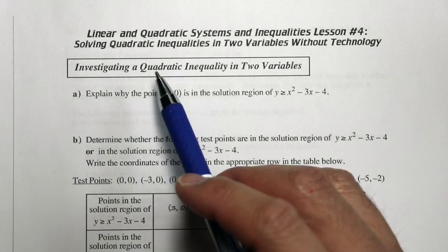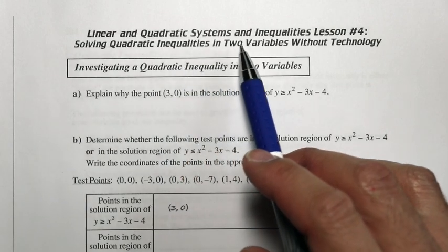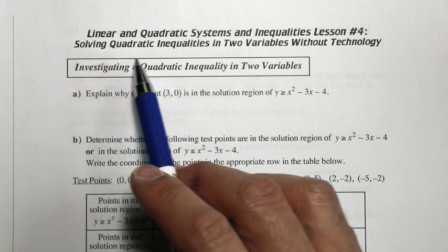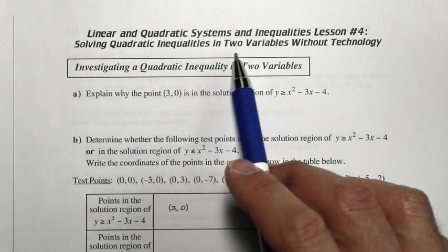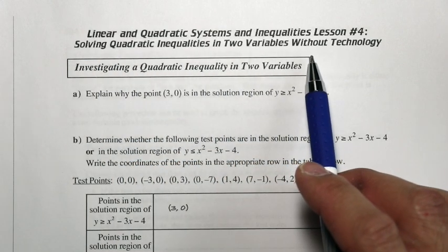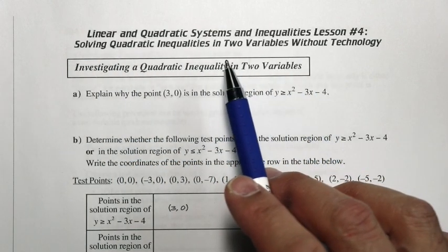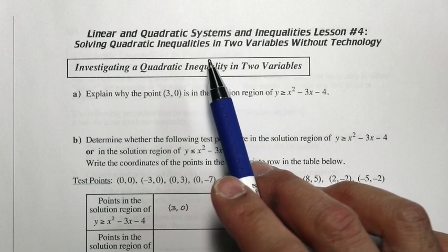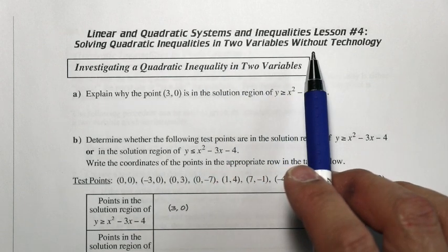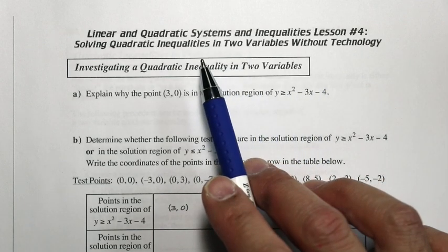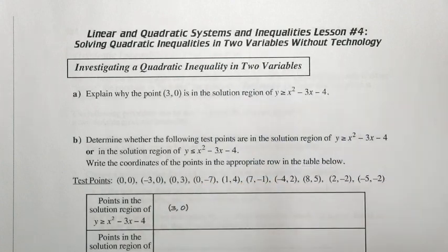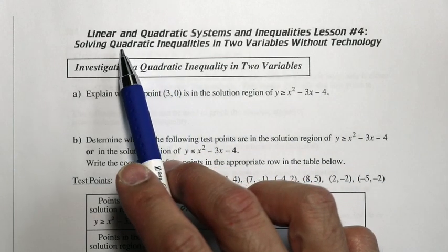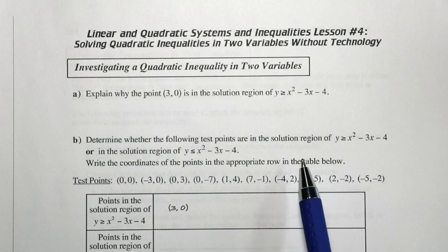We are talking about linear and quadratic systems and inequalities, lesson number four: solving quadratic inequalities in two variables without technology. We've covered how to solve quadratic inequalities with just one variable, and we've solved linear inequalities with two variables. Now we're trying to solve quadratic inequalities in two variables.